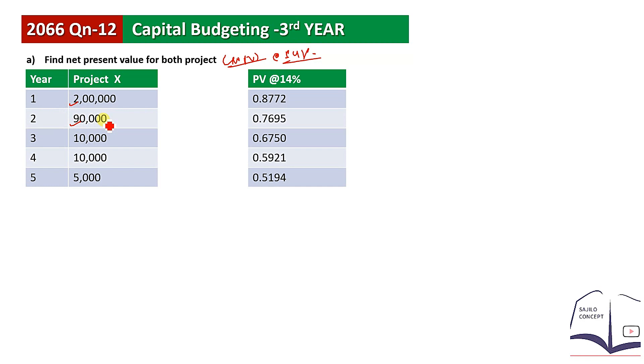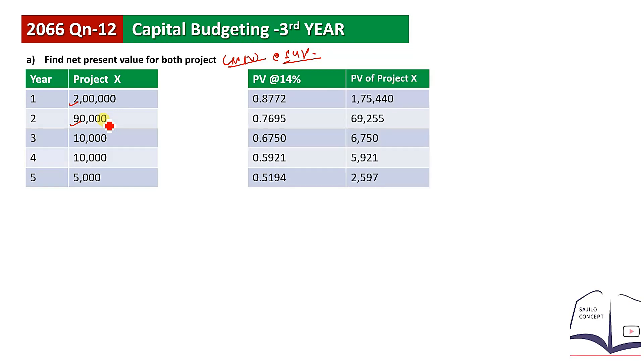We multiply each cash inflow by the corresponding discount rate factor to get the present value. This is the future value discounted at the given rate. For each year, we apply the PVIF multiplication to get the discounted cash flow.